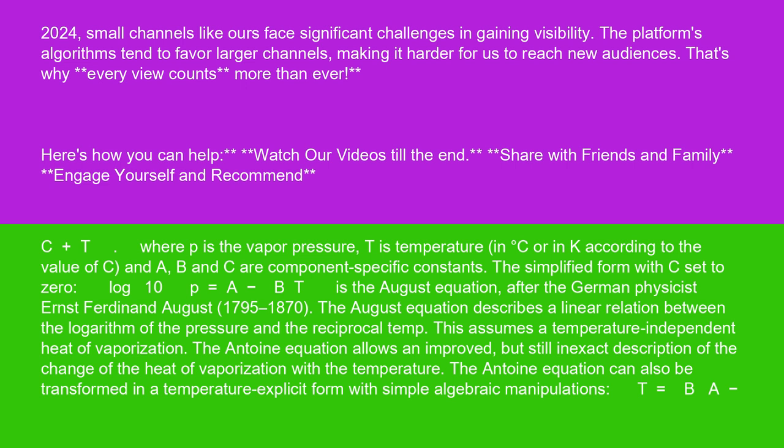The August equation describes a linear relation between the logarithm of the pressure and the reciprocal temp. This assumes a temperature-independent heat of vaporization. The Antoine equation allows an improved but still inexact description of the change of the heat of vaporization with the temperature.